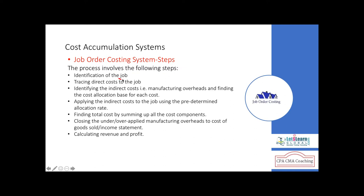In job order costing, first we identify the job and assign a job number — job number 1, 2, 3. Then we trace out the direct costs: direct material and direct labor. We know the quantity times rate for material, and labor hours times labor rate. In addition, we must charge indirect expenses called overheads — such as factory rent, electricity, repairs, maintenance, and depreciation.